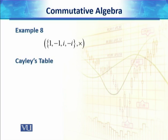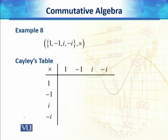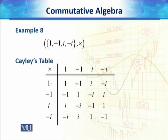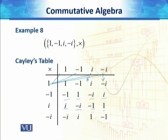The Cayley table for the set {1, -1, i, -i} under multiplication is computed as follows. The columns and rows are both labeled 1, -1, i, -i. We get: 1×1=1, 1×(-1)=-1, 1×i=i, 1×(-i)=-i. For the row of -1: -1, 1, -i, i. For the row of i: i, -i, -1, 1. For the row of -i: -i, i, 1, -1.